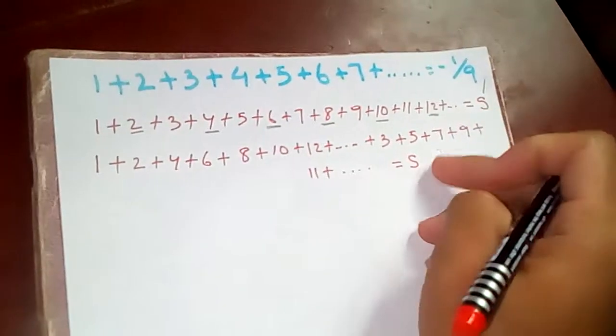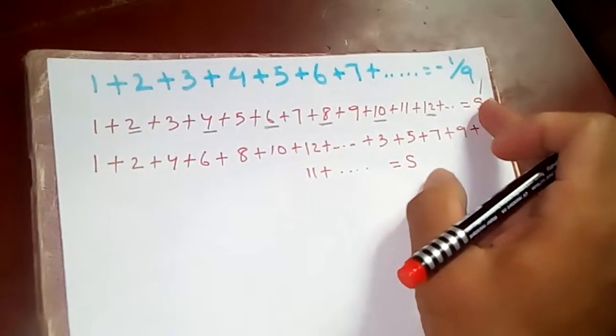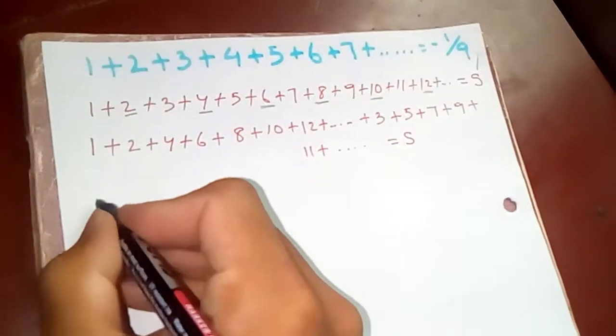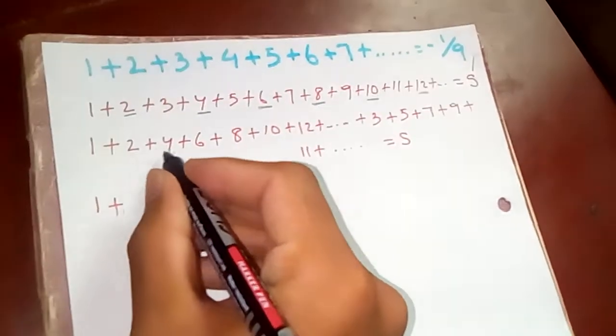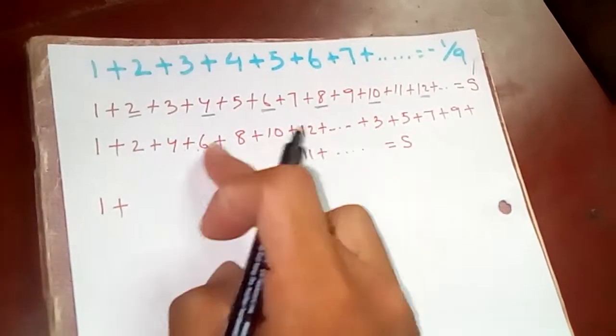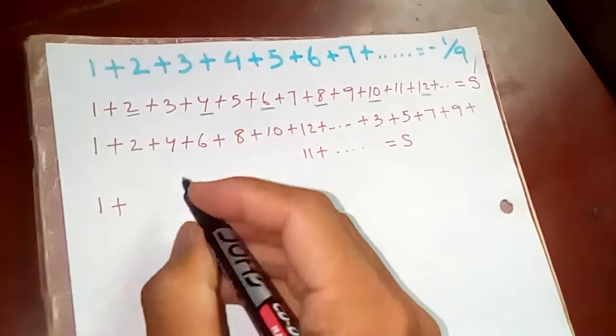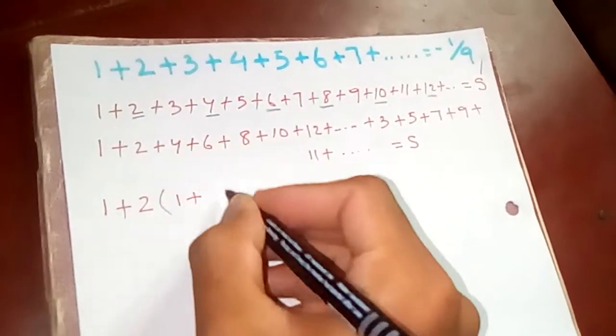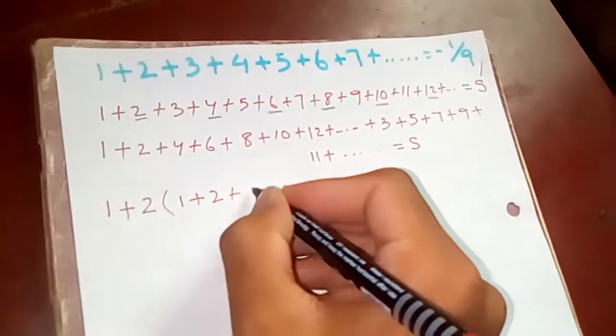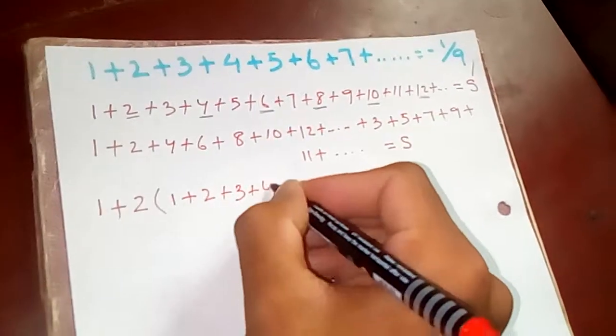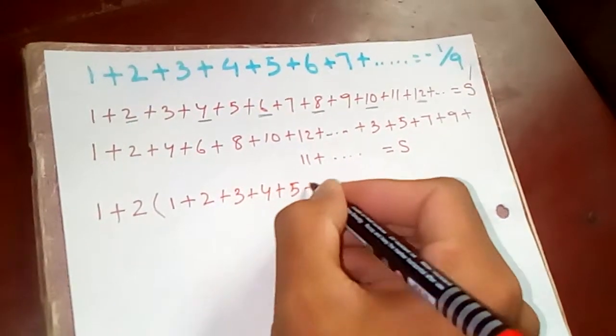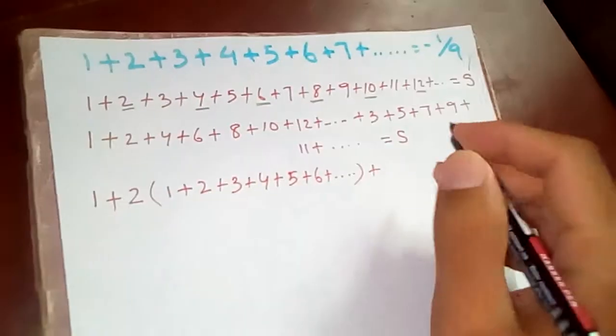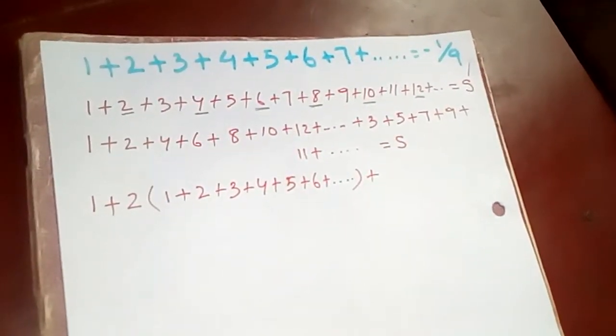This is nothing but our S. It doesn't change. Now, so one plus, here I'm going to take in the even number. I'm going to take 2S, two common. So if I take two common here, one left, here two left, here three left, here four, five, six and so on. Plus now, what we are going to do is...